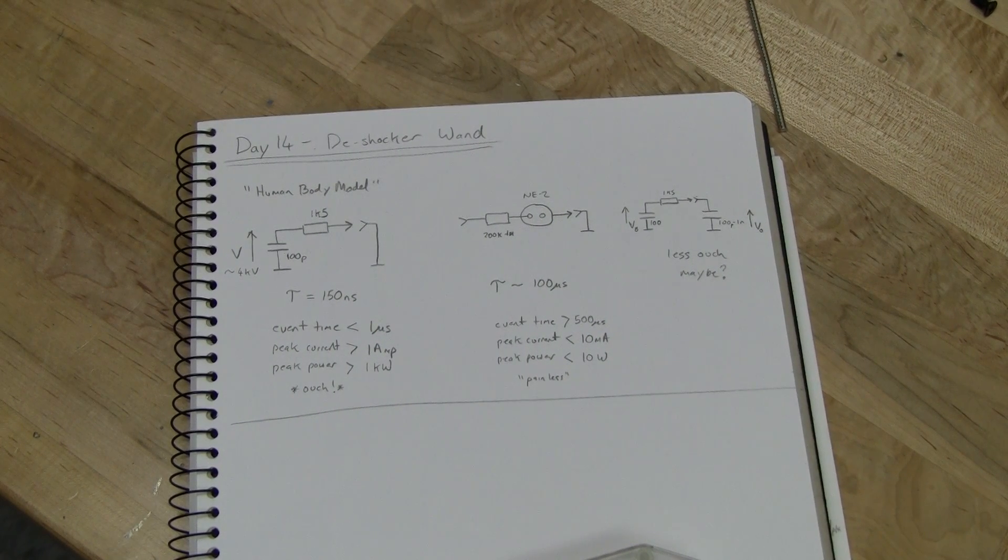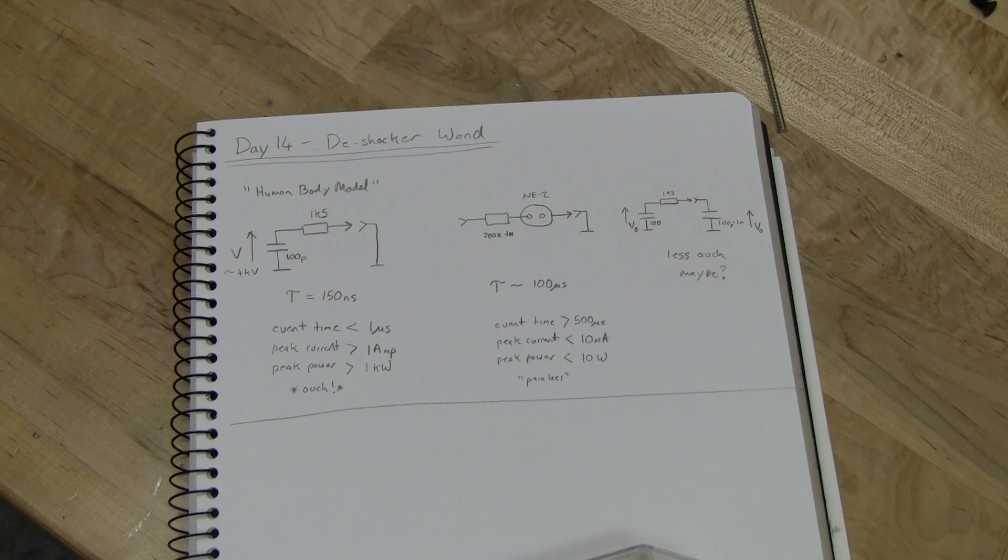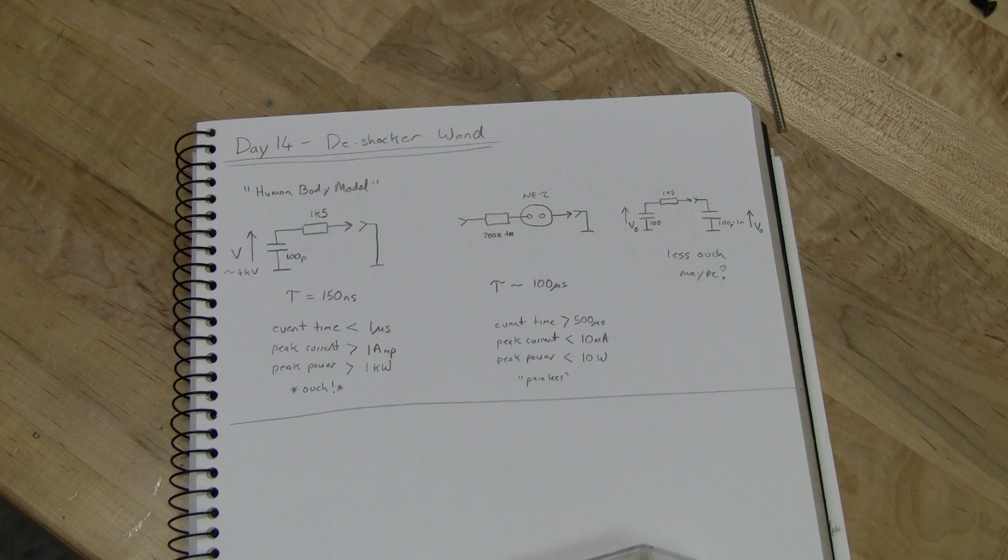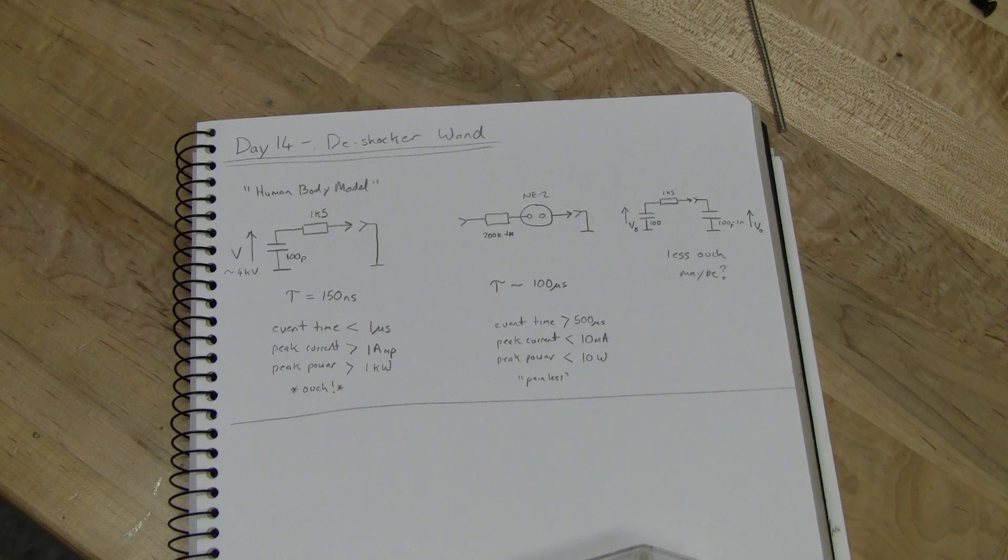G'day everyone. Day 14, de-shock a wand. This is a project that my girlfriend begged me to make. Some time ago I built several different kinds of static electricity discharge wands to reduce the shock or eliminate the pain of electrostatic discharge to a grounded object or to a large capacitive object. I thought it was a bit trivial for one of the day circuits but it does illustrate some interesting properties.